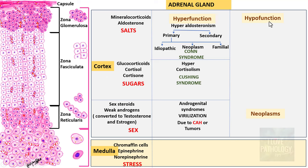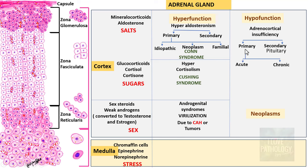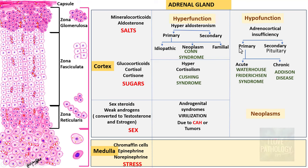Now let's look at the hypofunctioning of the Adrenal Cortex. The most important condition is adrenocortical insufficiency, which can be classified into primary and secondary. Secondary is most often due to pituitary causes. Primary can be further classified into acute adrenocortical insufficiency — referred to as Waterhouse-Friderichsen syndrome — and chronic adrenocortical insufficiency — referred to as Addison disease. Causes of Addison disease include autoimmune, infection, metastatic deposits to the adrenal glands, and various genetic causes.